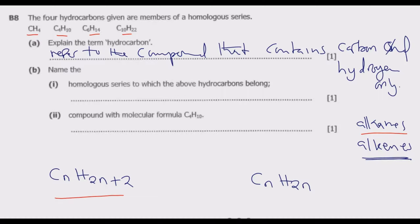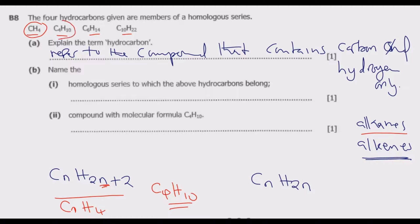If we pick the first compound and C is 1, then H is 2 times 1 which is 2 plus 2, giving us 4 — that matches CH4. When C is 4, H is 4 times 2 which is 8 plus 2, giving us 10 — that matches C4H10. So these compounds fit the alkane formula, and they belong to alkanes.